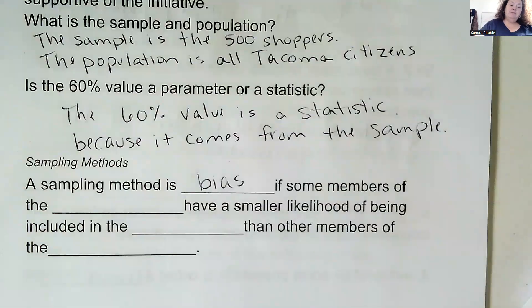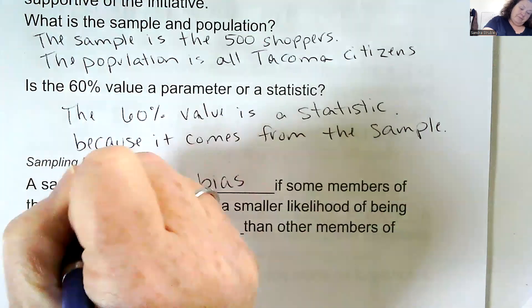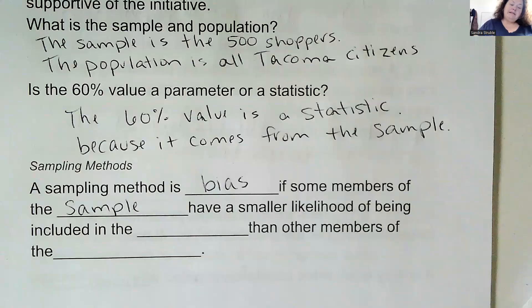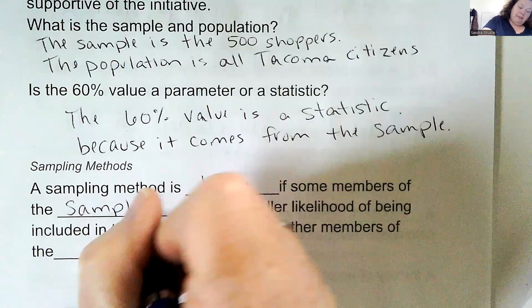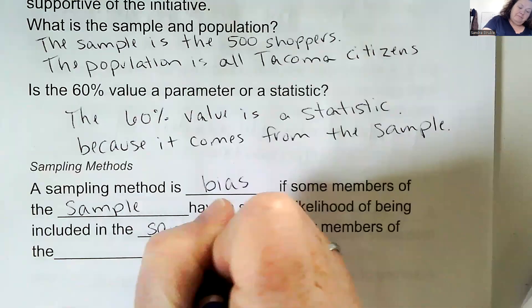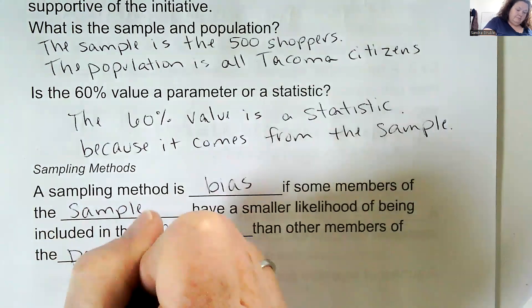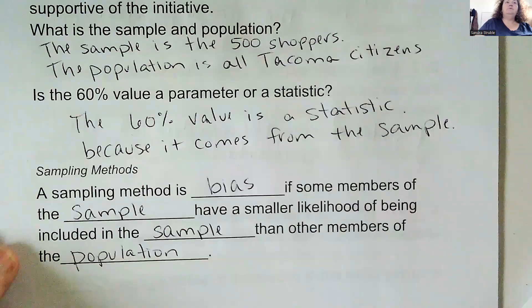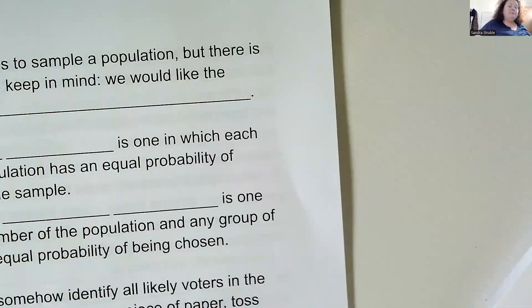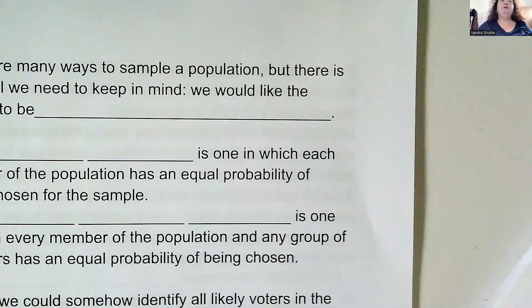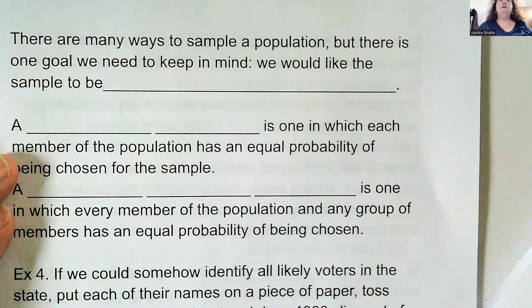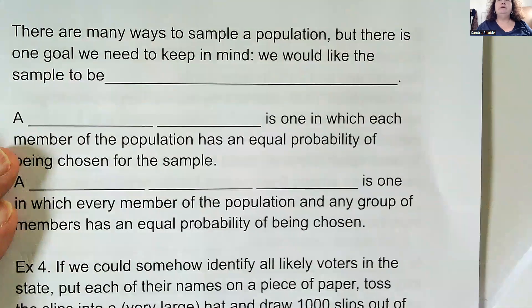If some members of the sample have a smaller likelihood of being included in the sample than other members of the population, that is bias. Everyone should have the same opportunity to be in the sample. That is the only way you can guarantee that it is a good representation of the population.